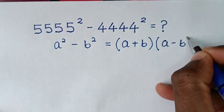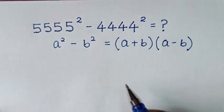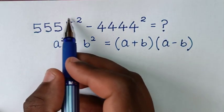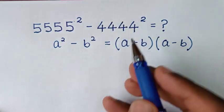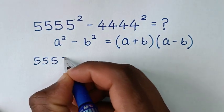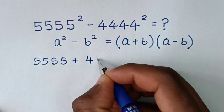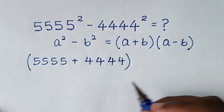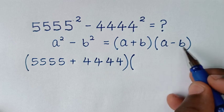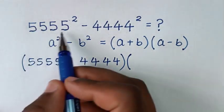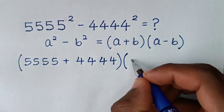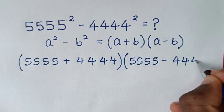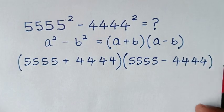So we'll apply this form. Then from here, a plus b will be 5555 plus 4444, then times a minus b, which will be 5555 minus 4444.